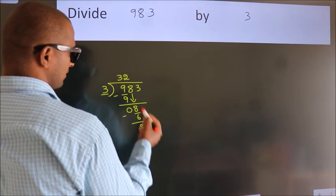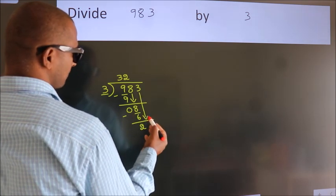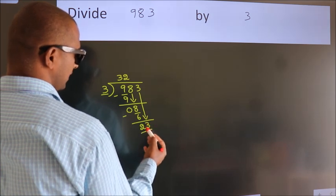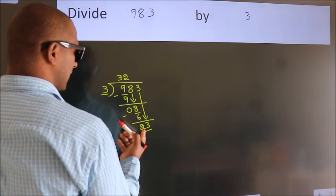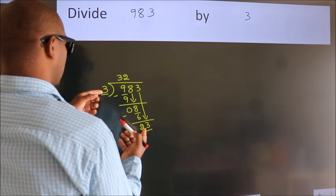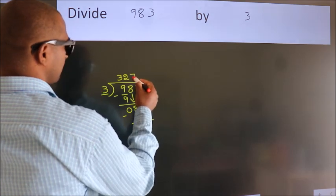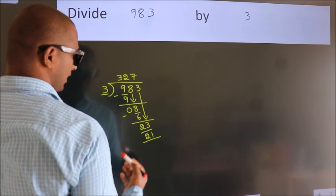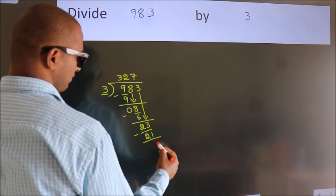After this, bring down the beside number. So 3 down. So 23. A number close to 23 in 3 table is 3 times 7 is 21. Now we subtract. We get 2.